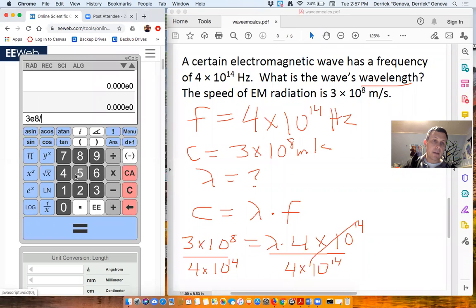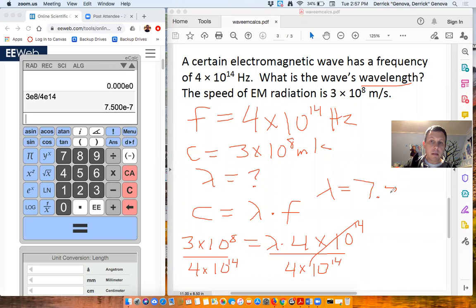So I go to my calculator. 3 e to the 8th divided by 4 e to the 14th. Hit enter. 7.5 times 10 to the negative 7. So my wavelength is simply going to be 7.5 times 10 to the negative 7. And because it's a wavelength, it will have units of meters as long as I've used all these other things properly.